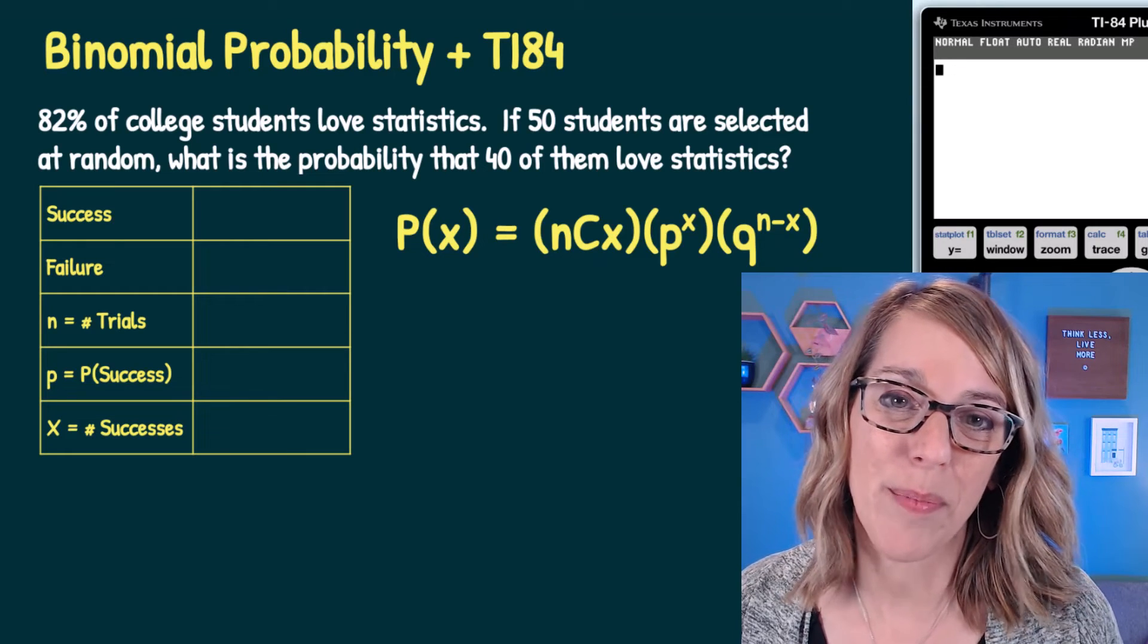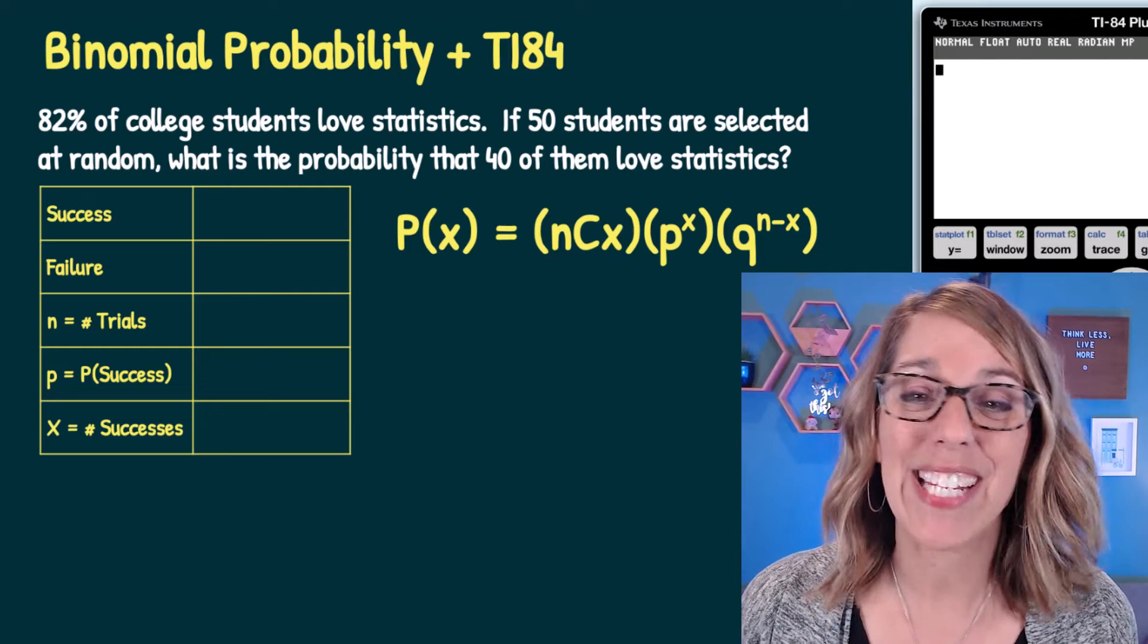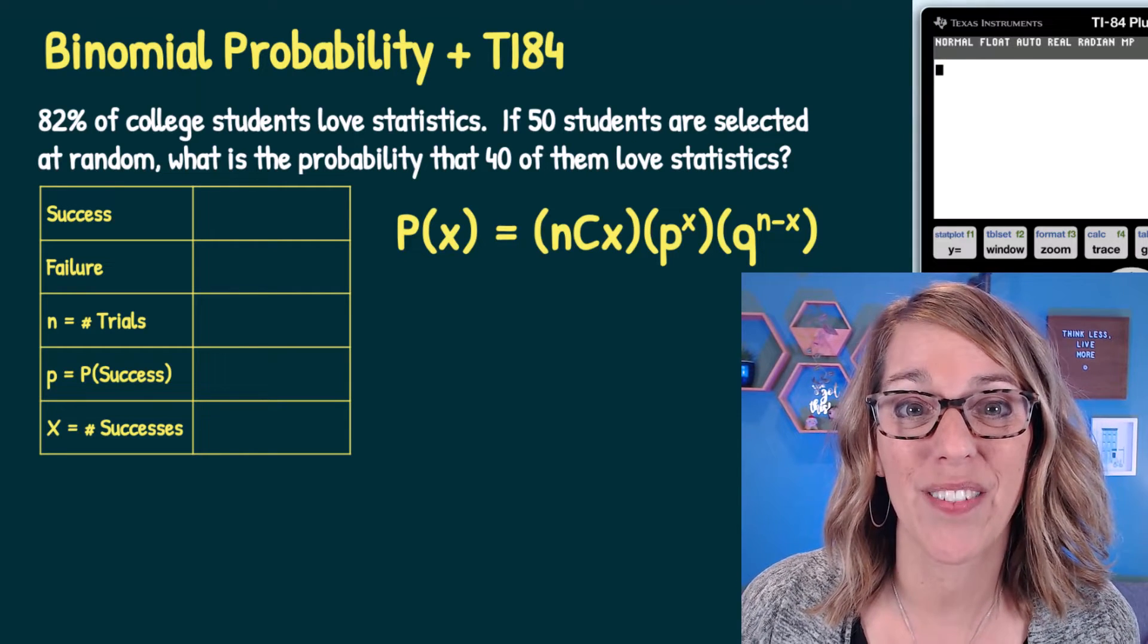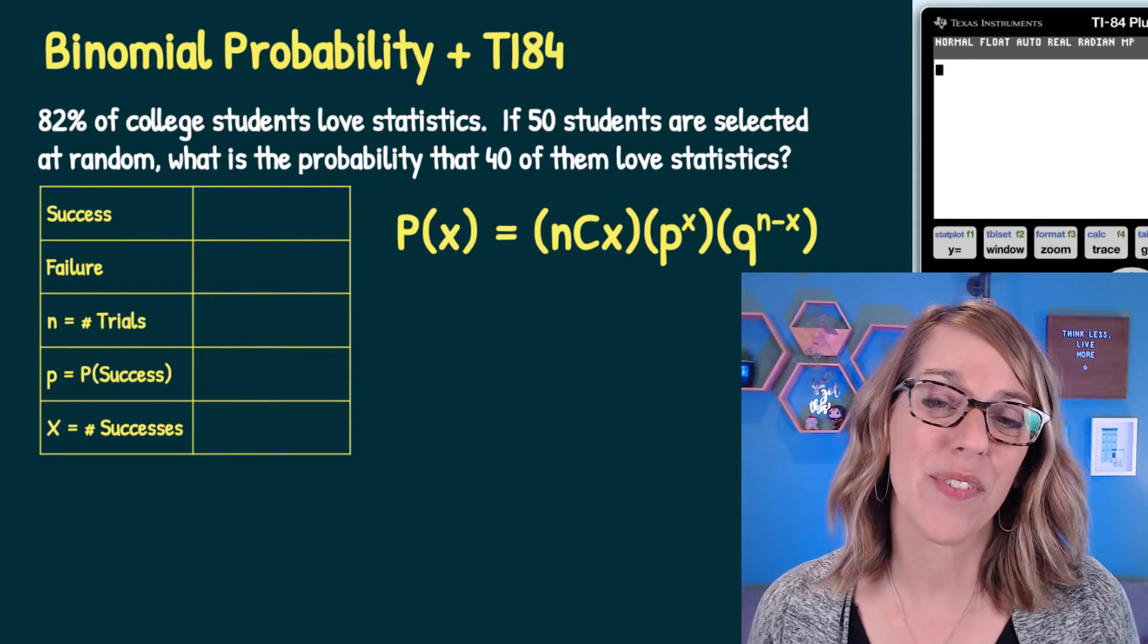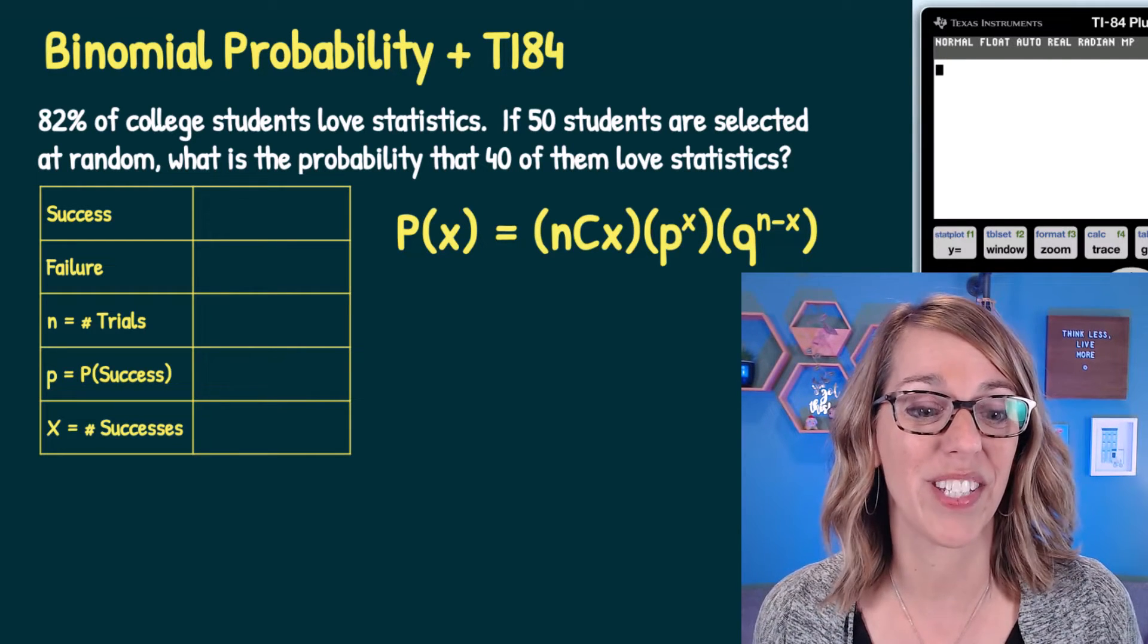Let's find this binomial probability using the calculator. In this example, 82% of college students love statistics. If 50 students are selected at random, what is the probability that 40 of them love statistics?